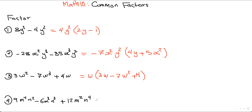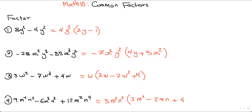In the next example, looking at 9, 6, and 12, the number 3 goes into all of them. For m⁴, m³, and m², the smallest exponent is m², so we take m² out. For n², n³, and n⁴, n² is the lowest, so we take n² out. Then: 9 divided by 3 is 3, m⁴ divided by m² is m², n² divided by n² cancels; minus 6 divided by 3 is 2, m³ divided by m² is m, n³ divided by n² is n; plus 12 divided by 3 is 4, m² divided by m² cancels, and n⁴ divided by n² is n².